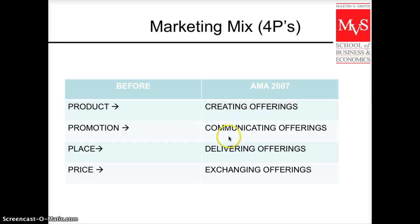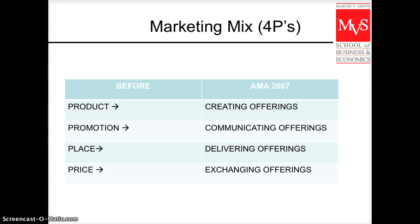Instead of promotion, they talk about communicating the offerings — telling our potential market how good our offer is. Instead of distribution or place, they talk about delivering those offerings. And instead of price, they talk about exchanging offerings, because when we discuss different revenue models, it's not always an exchange of money for an asset. There are many ways to exchange value among consumers. We will still talk about the marketing mix, and as you can see, the last four units in the course are structured around each of the four P's.